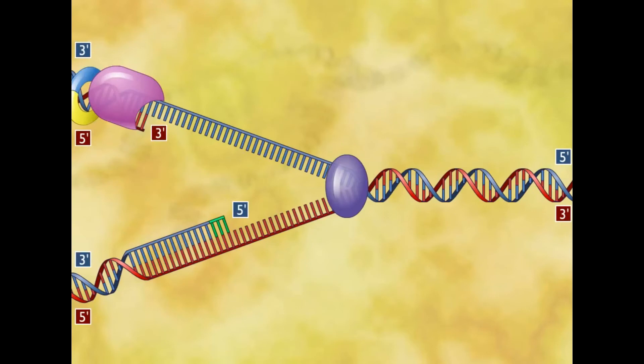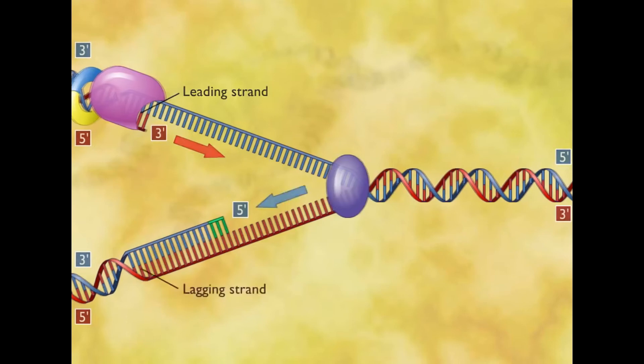Since the two strands are antiparallel, one DNA strand called the leading strand is replicated from 3 to 5 end, continuously in the same direction as the moving fork, while the other the lagging strand is replicated in the opposite direction.